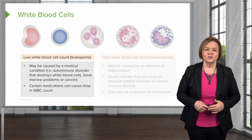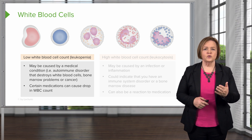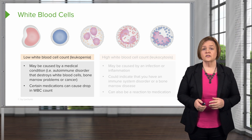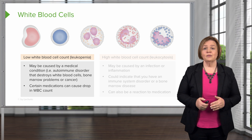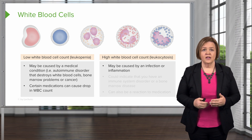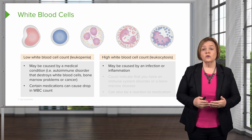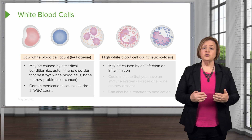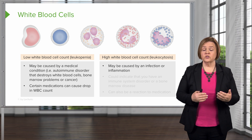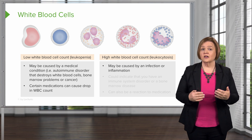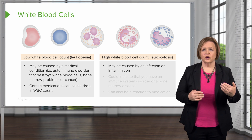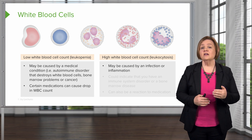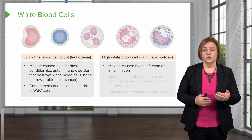So we're back to white blood cells. We already looked at leukopenia, which is low white blood cells. Now let's talk about high white blood cell count — that's leukocytosis. Look at those two words: both start with leuko, which tells us we're talking about white blood cells. Penia means low and cytosis means elevated.